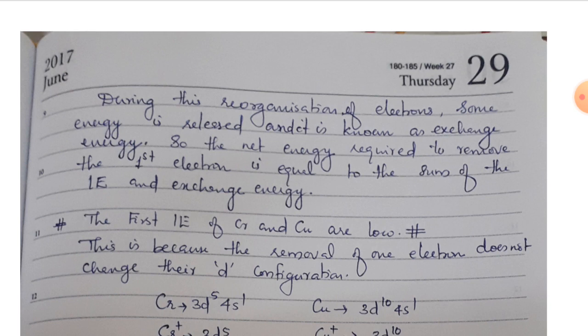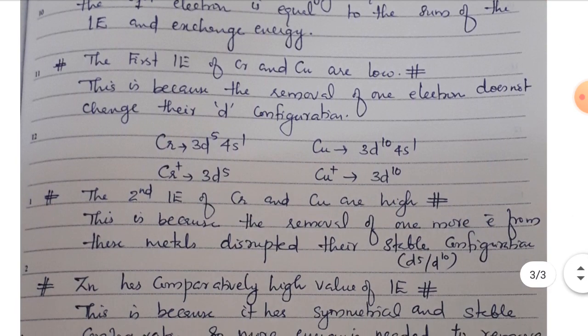There is an irregularity in the ionization enthalpy. The first ionization enthalpy of chromium and copper is low. This is because the removal of one electron does not change their d-configuration. In chromium's case, there is a 3d5-4s1 configuration.